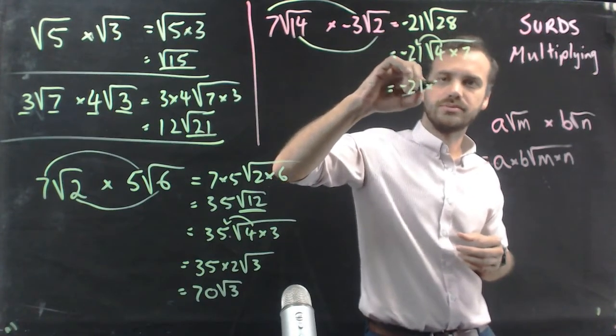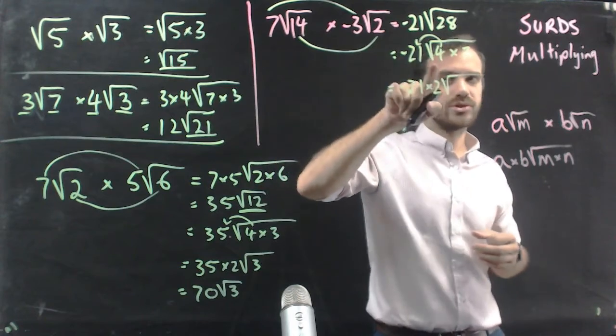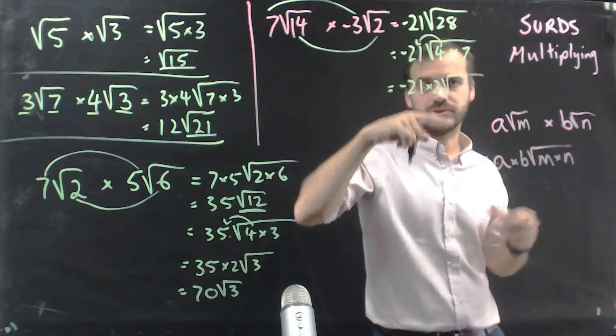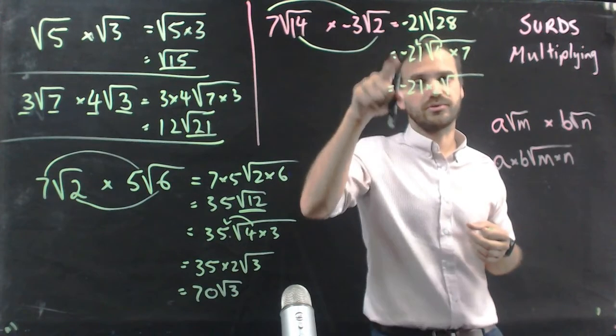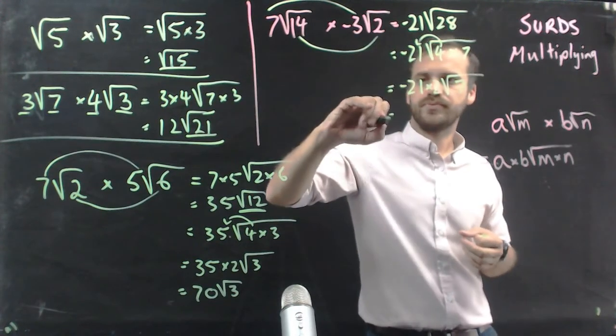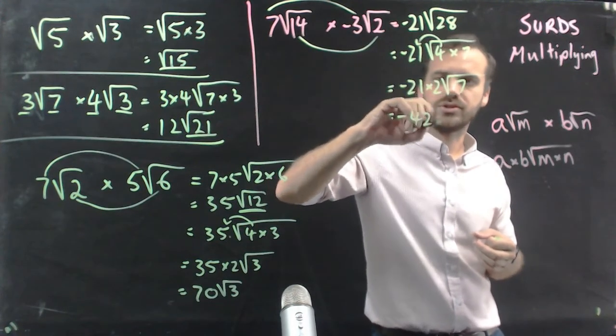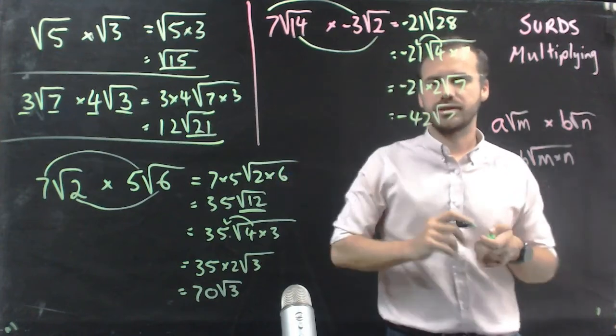Negative 21 times 2. Now, remember, it's not half of 4. It's the square root of 4. If that was the number 9, then it would be 3. Negative 42 root 7.